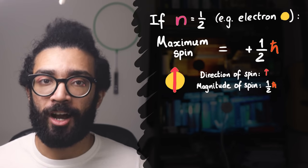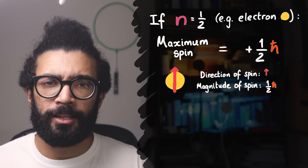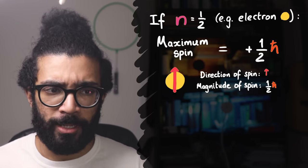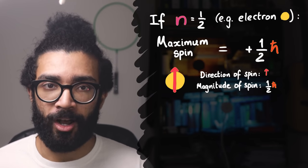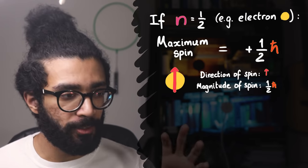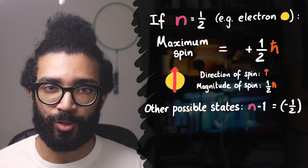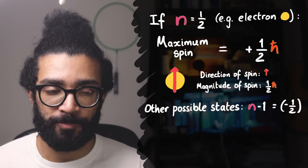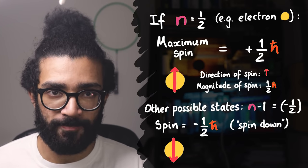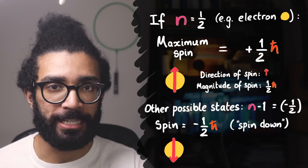Let's say that we're working with a spin half particle, like an electron. Now we already know the angular momentum that our electron can have in one possible state. As we said, it's half h-bar. And then we take our spin number and we subtract one from it. This gives us the angular momentum our particle can have in another possible state. In this particular case, minus half h-bar.